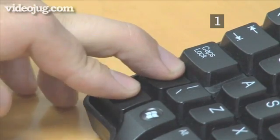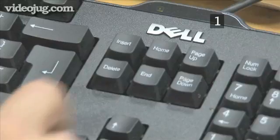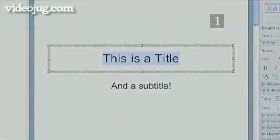Use Shift Ctrl Home to select all the text from the cursor to the start of the active text box. Use Shift Ctrl End to select all the text from the cursor to the end of the active text box.